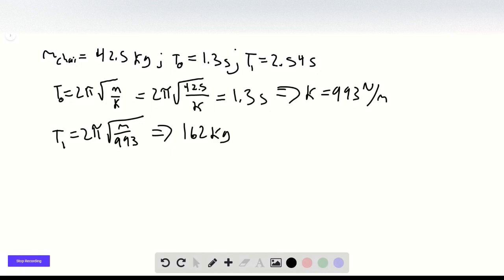We need to subtract the mass of the chair. The mass of the person is 162 minus 42.5, which is about 120 kilograms.